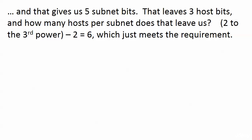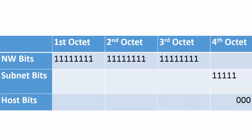So what does that do for us? It just meets the requirement — three host bits means each subnet will have 2 to the third power minus 2, which is exactly 6 hosts per subnet. Five subnet bits meets the minimum requirement of subnets, and those three host bits give us exactly six valid hosts per subnet. Both requirements met — we're in great shape.